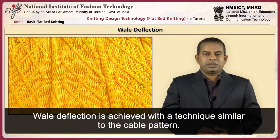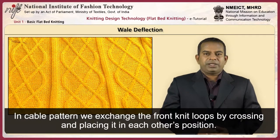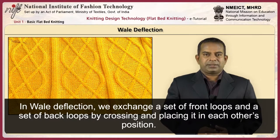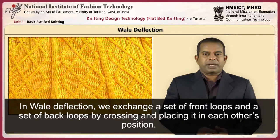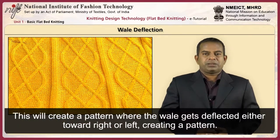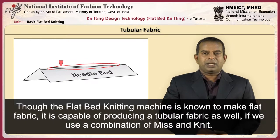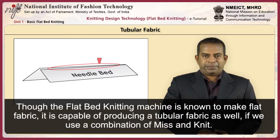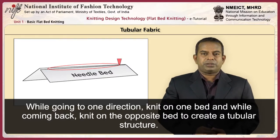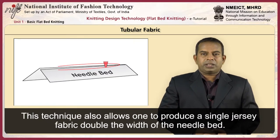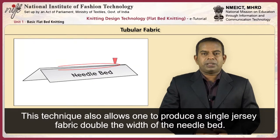Racking is achieved by relative movement of one needle bed against the other sideways. This shifts the loops of one bed in relation to the loops of the other bed, making the wale deflect towards right or left. To show the racking effect, a rib structure with drop needle is used. The front stitch then moves towards right or left over the back knit and a zigzag pattern emerges. Veil deflection is achieved with a technique similar to cable pattern. In cable pattern, the front knit loops are crossed and placed in each other's position. In veil deflection, a set of front loops and a set of back loops are crossed and exchanged, creating a pattern where the wales get deflected either right or left. The flatbed knitting machine can also produce tubular fabric by using a combination of miss and knit — knit on one bed for odd courses and on the opposite bed for even courses.